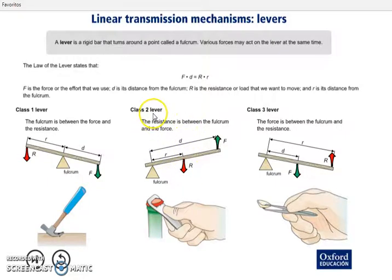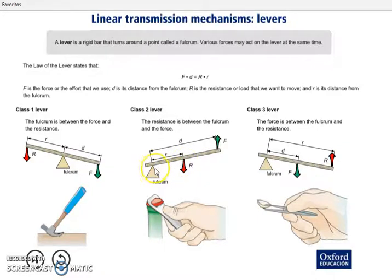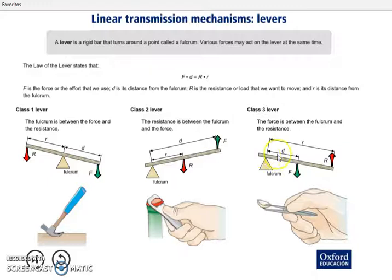So, if we have a second class lever, the same applies: if we multiply the force by the distance from the force to the fulcrum, that multiplication is exactly the same as if we multiply the resistance by the distance from the resistance to the fulcrum. Third class lever — the same principle holds.